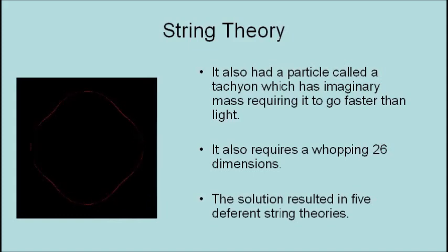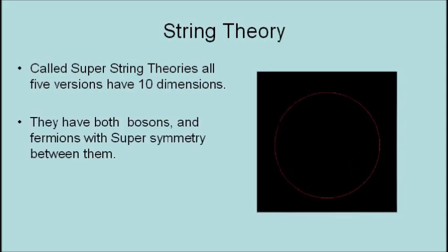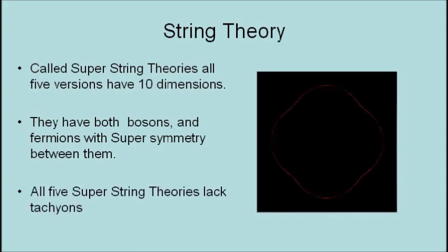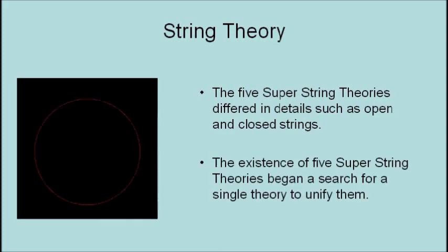The solution resulted in five different string theories. Called super-string theories, all five versions have 10 dimensions. They have both bosons and fermions, with supersymmetry between them. All five super-string theories lack tachyons. The five super-string theories differ in details such as open and closed strings. The existence of five super-string theories began a search for a single theory to unify them.